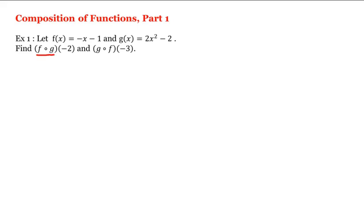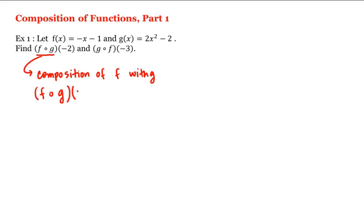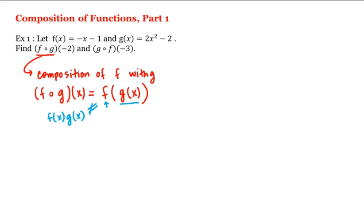This function is called the composition of f with g, and is defined as follows: f composed with g of x is equal to f evaluated at g of x. That is, we plug in g of x as the input to the outside function. Be careful — this is different than f of x times g of x. These are not equal.